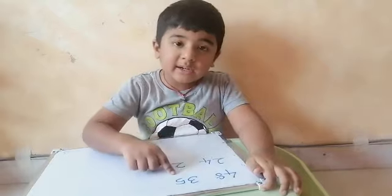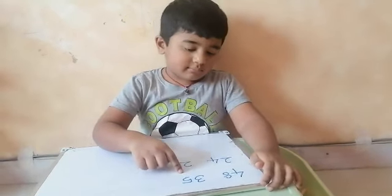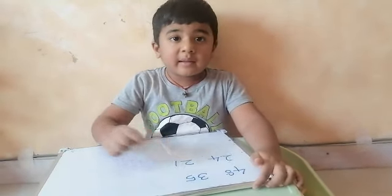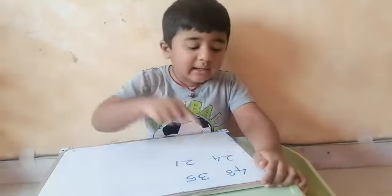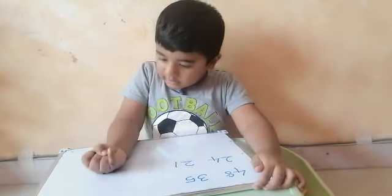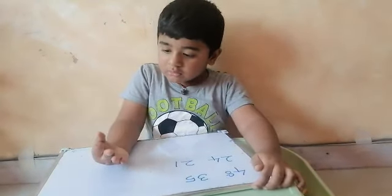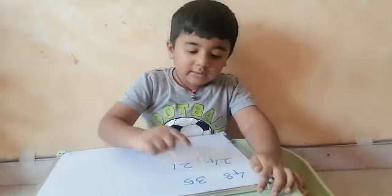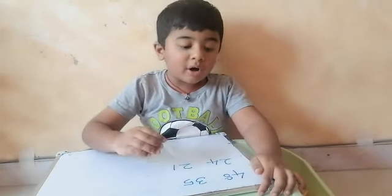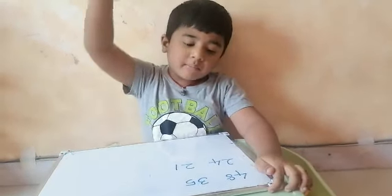48 and 35. Look at your tens place and start counting: 4, 3. 35 is the smaller number. 48 is the bigger number.